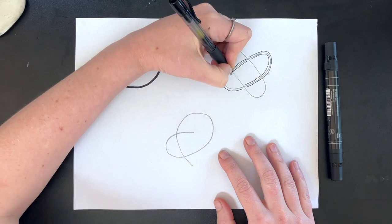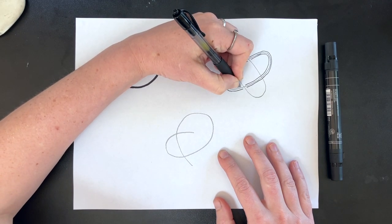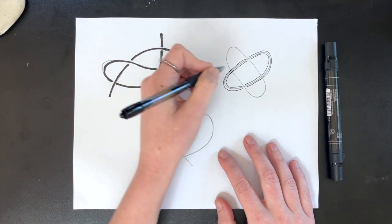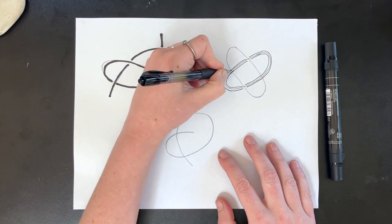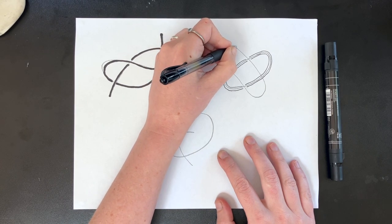In this case, because I drew two loops, after I have finished the first loop, I need to pick a spot where I can already tell that the line goes under. Start there and draw as usual.